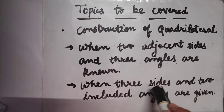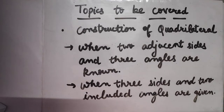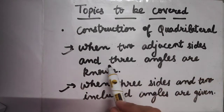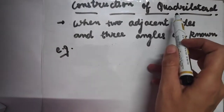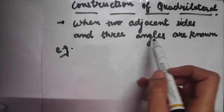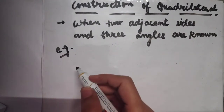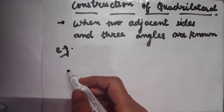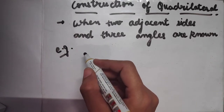Three measurements of three sides will be given to us and the two included angles between these three sides will also be given. These are the two cases we will be learning today in lecture number 3. Let us begin with the very first case — how to construct a quadrilateral when two adjacent sides and three angles are known. I will be explaining this case with the help of an example.